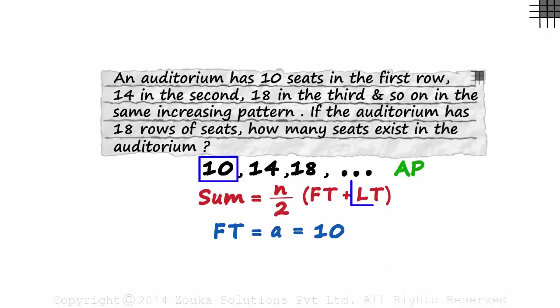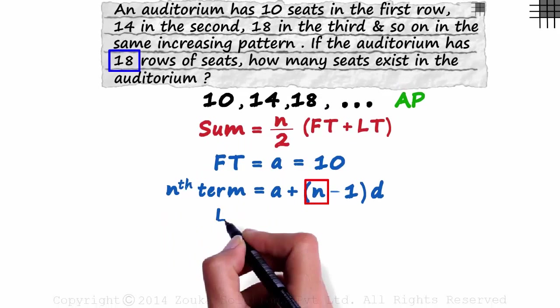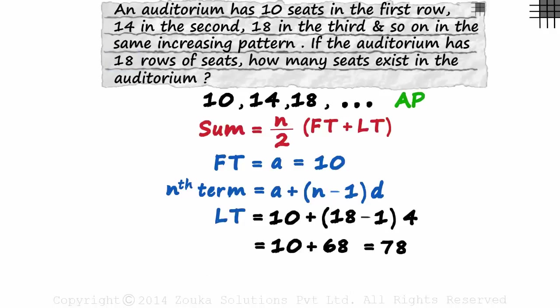And how do we find the last term? There are 18 rows. The Nth term of an AP is given by A plus N minus 1 times D. To find the last term, we just substitute 18 in place of N. We get the last term as 78.